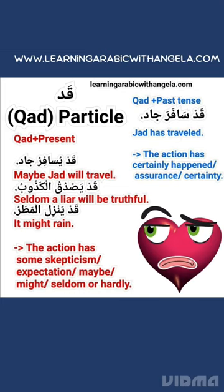Particle قد in Arabic. When used before the past tense, it implies that the action has certainly happened — verily or indeed happened. For example, قد سافر جاد means 'Jad has travelled' or 'Jad has indeed travelled.'